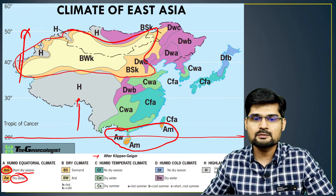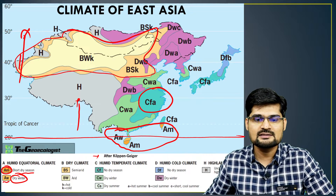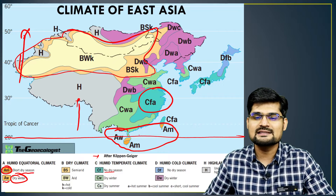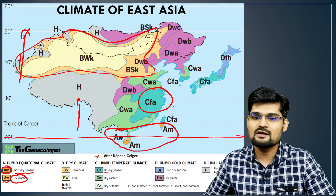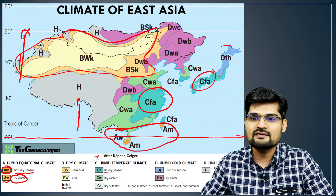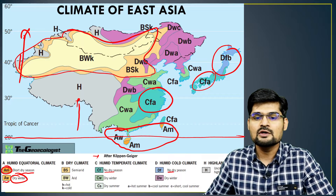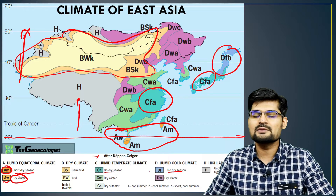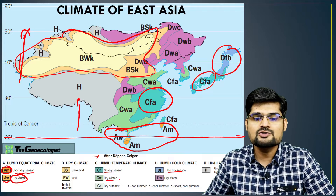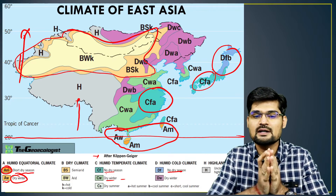In the eastern portions, CFA climate is present — mostly no dry season, mostly humid areas. Then CFA and DFB climate types show no dry season but a humid and cold climate, with dry winters observed in most parts.